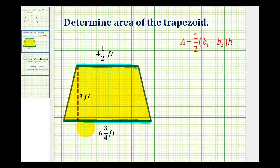So looking at our trapezoid, let's let the length of base one equal six and three-fourths feet, and let's let the length of base two equal four and one-half feet.